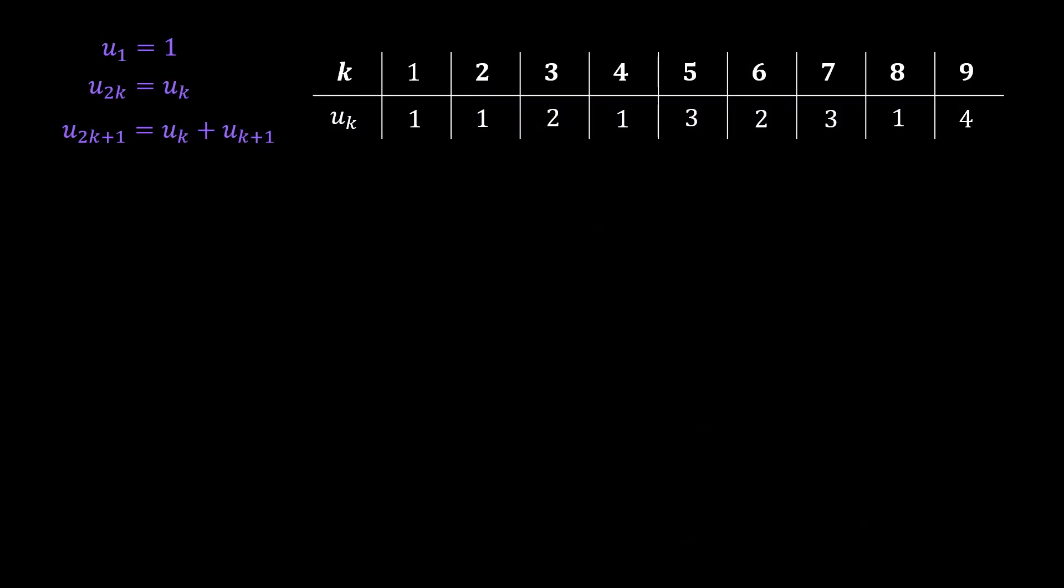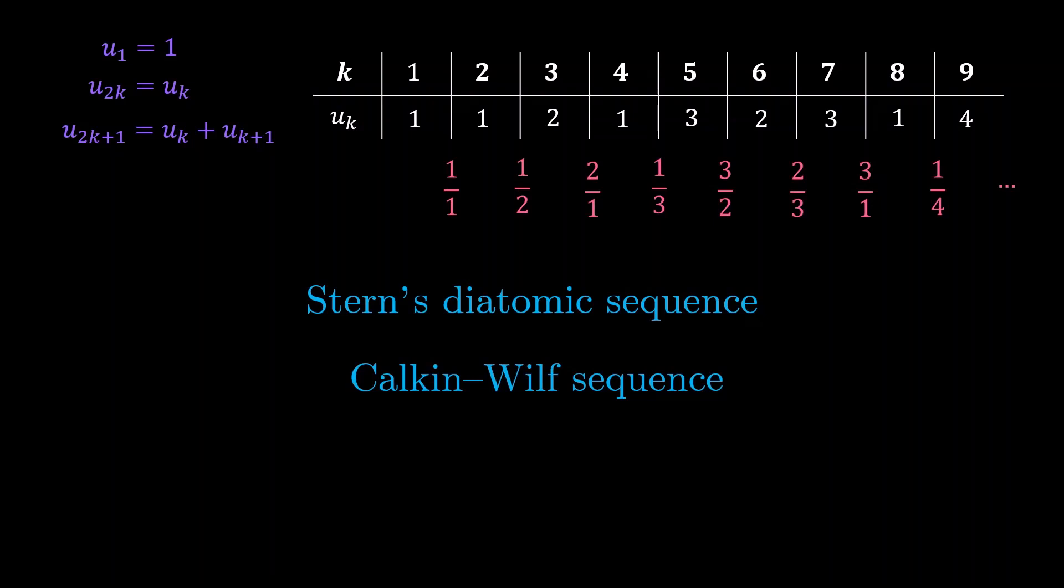These sequences actually have names. The sequence of positive integers is called the Stern's diatomic sequence, whereas the sequence of rational numbers is known as the Calkin-Wilf sequence. Actually, you can even define the Calkin-Wilf sequence in a recursive manner using the recursion equation shown on the screen. However, we will not be going into much detail on this in this video.